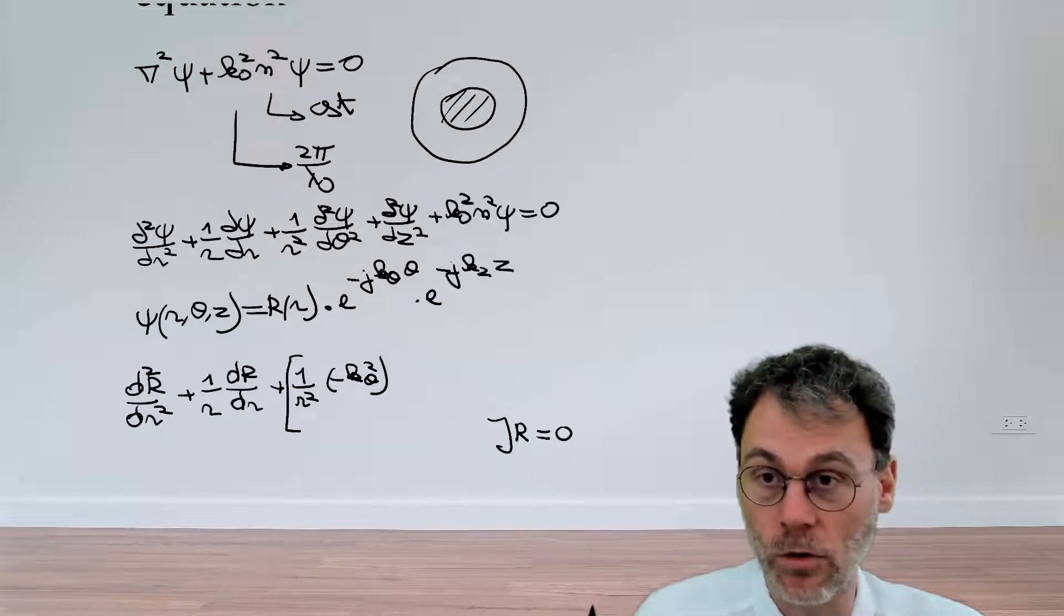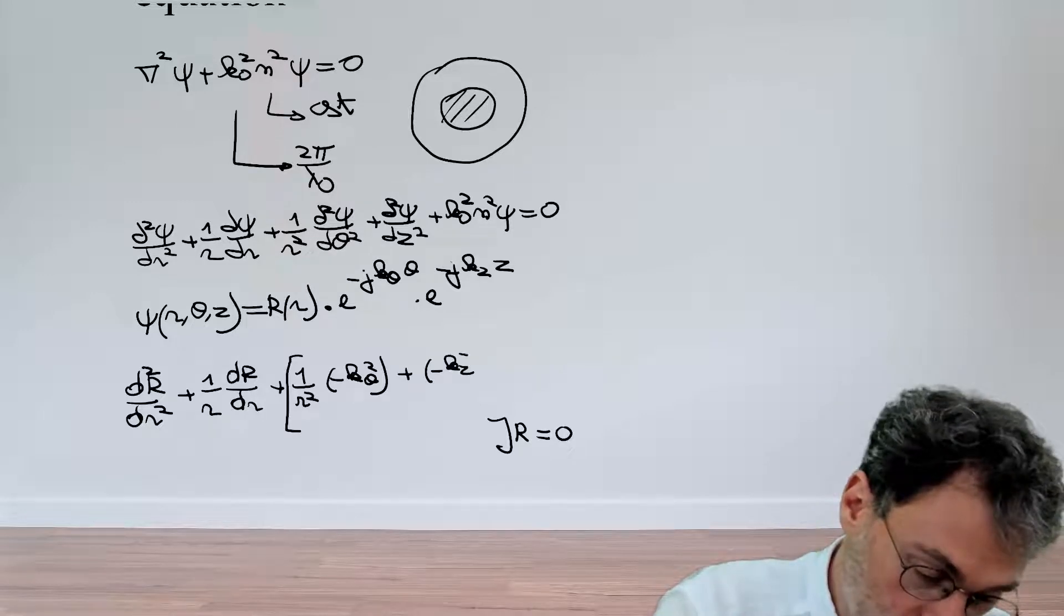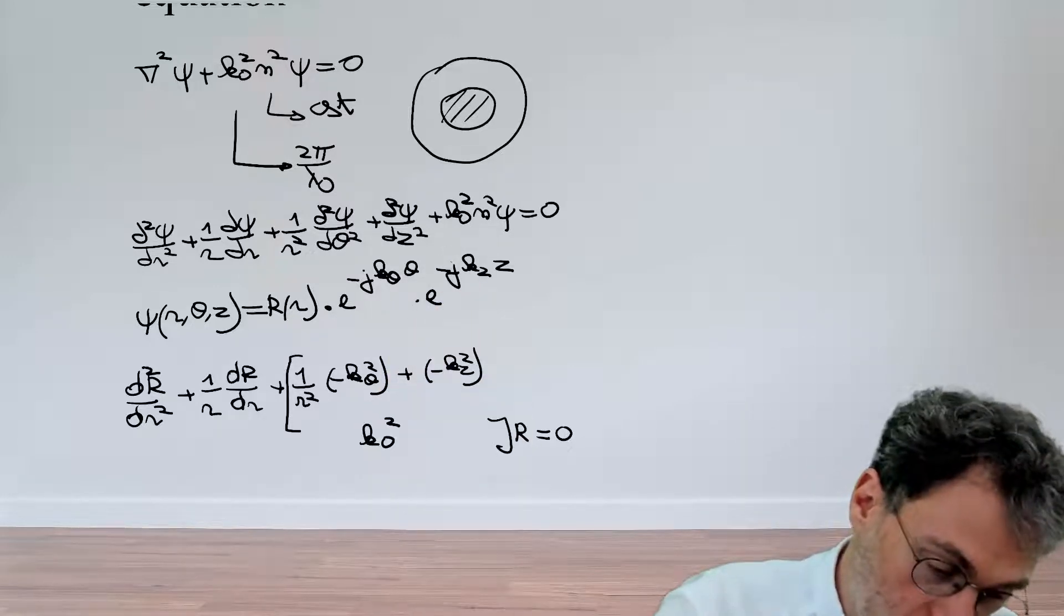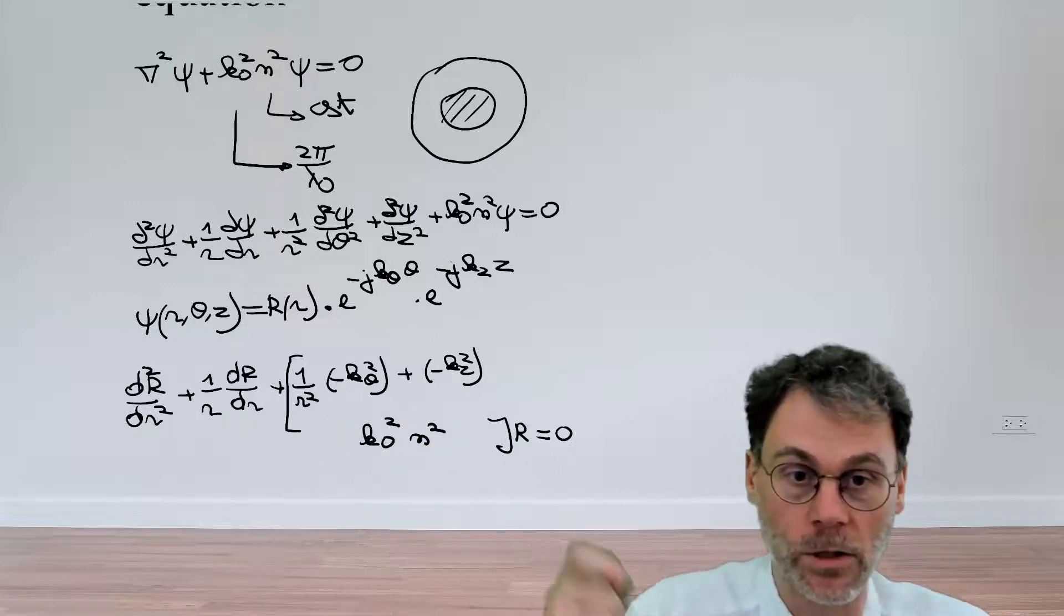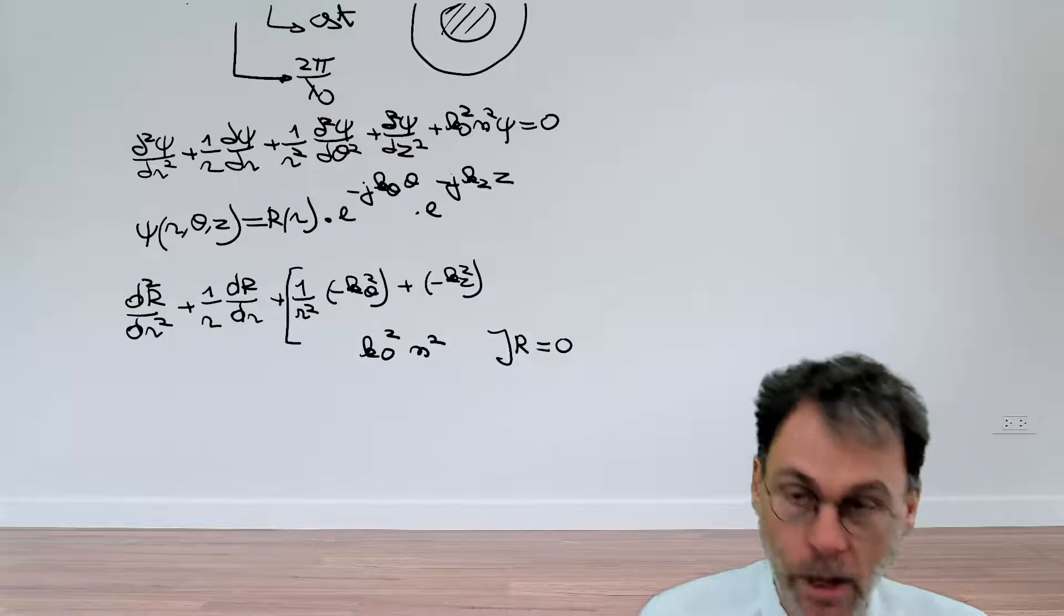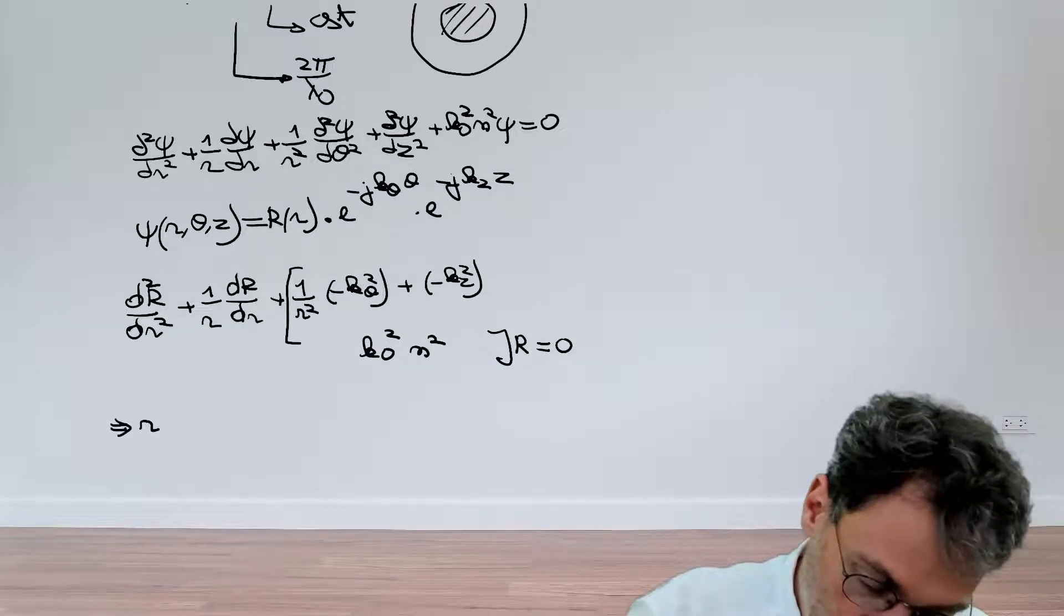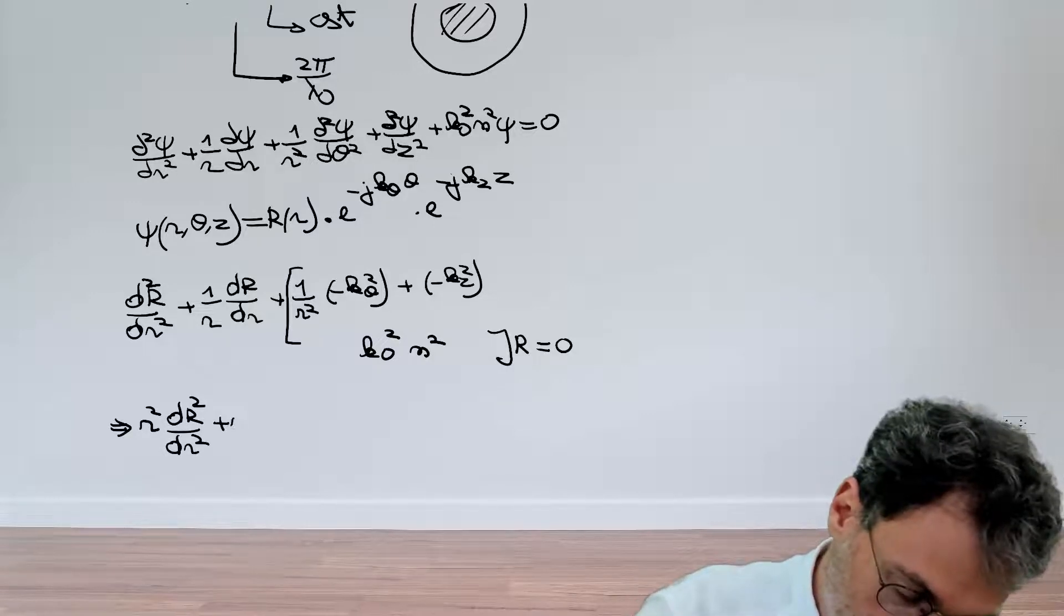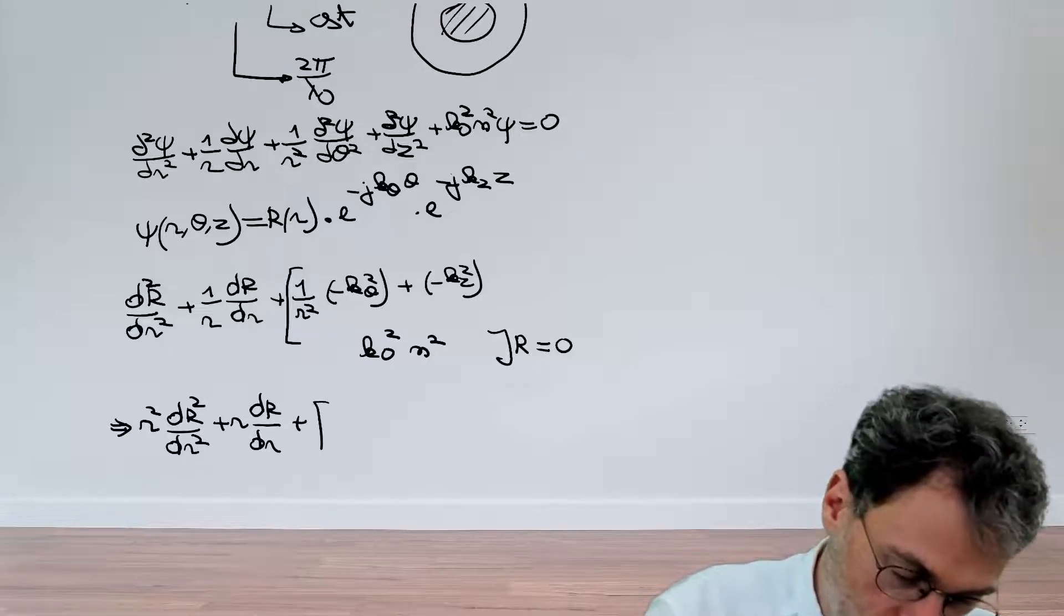So now we still need to tackle these final two terms and figure out what pre-factor they have when it comes to multiplying r. The next step, we have the second order derivative with respect to z. So there we pick up a factor minus kz² similarly. And then finally, we have this guy here, which is our original k₀²n². So here we have three factors which multiply r.